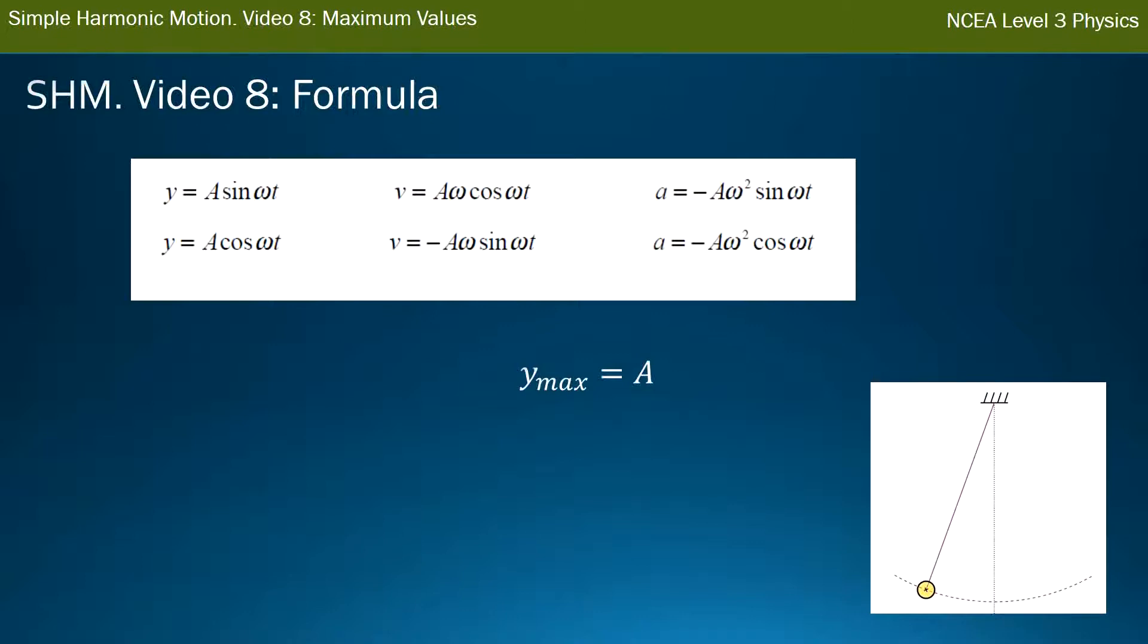The largest value you can get out for velocity in either equation is cos omega t or sine omega t getting to 1. And if they are 1, then 1 times the things in front of them is just a omega, that's what you get for the velocity max. Don't worry about the negative because we're just talking about the largest value we can get.